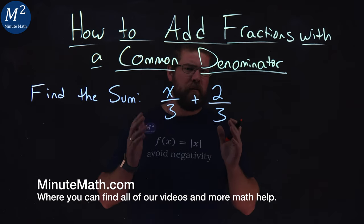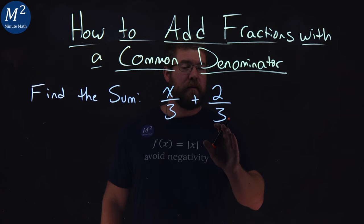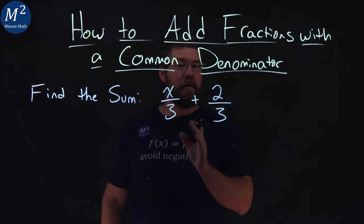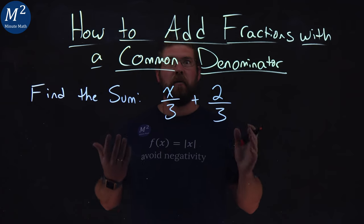Well, like the problem states, we're dealing with common denominators, 3 and 3. Since both of these fractions have a common denominator of 3, we can add them.